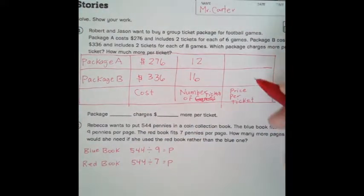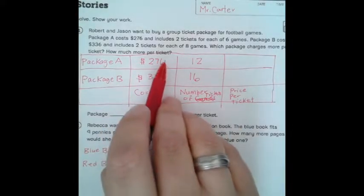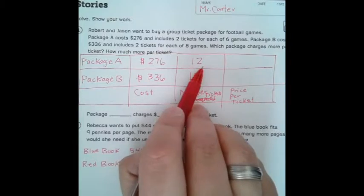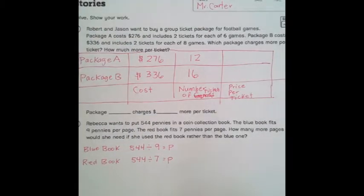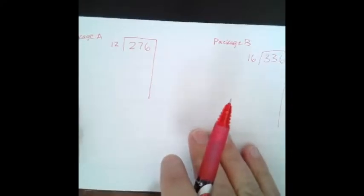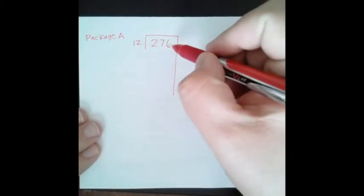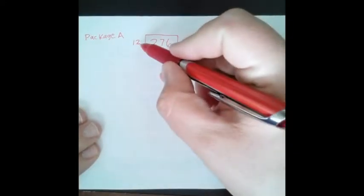But we're trying to figure out how much does it cost per ticket. So what we're going to have to do is take our total costs and divide it by the number of tickets that we have. So on this page here, I have our division work that we're going to do.